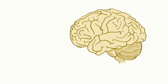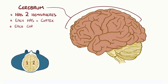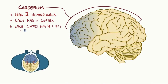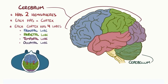The brain has a few regions. The most obvious is the cerebrum, which is divided into two cerebral hemispheres, each of which has a cortex — an outer region divided into four lobes including the frontal lobe, the parietal lobe, the temporal lobe, and the occipital lobe. There are also additional structures including the cerebellum, which is down below, as well as the brain stem, which connects to the spinal cord.